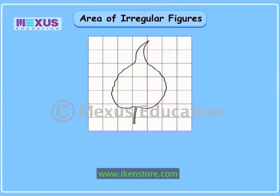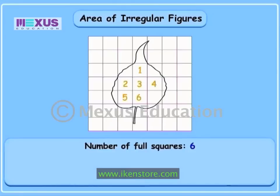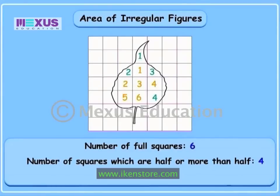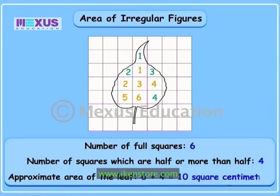Now look here. First, count all the complete squares covered by the picture — there are six full squares. Now count the number of half or more than half squares within the boundary of the leaf: one, two, three, four. Ignore the rest of the squares. We will consider the half or more than half squares also as one full square. Adding six and four will give you the approximate area of the leaf. So the approximate area of this leaf is ten square centimeters.